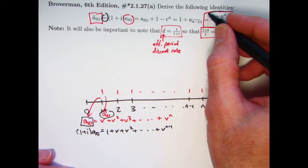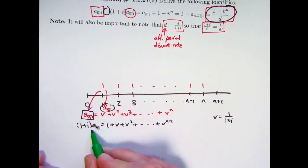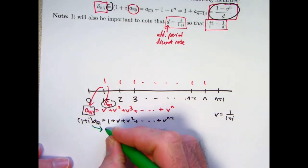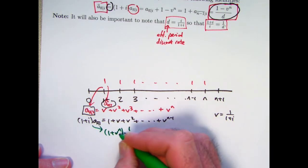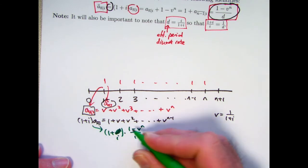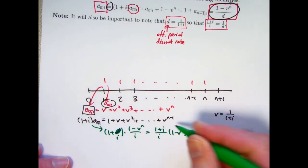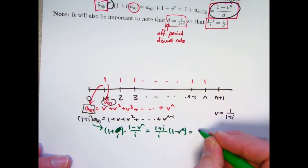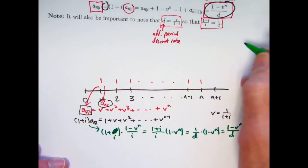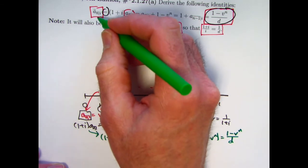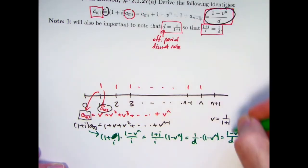Let's verify that both of these things equal (1 − vⁿ)/d. Take the expression 1 plus i times a_n, and replace a_n with its formula from the sum of a finite geometric series: (1 − vⁿ)/i. Rearranging, I can write this as (1 plus i)/i times (1 − vⁿ). Since 1 plus i over i equals 1 over d, this becomes (1/d)(1 − vⁿ), which equals (1 − vⁿ)/d. So I have derived that the present value of this annuity as an annuity due — finding its value right before the first payment — equals (1 − vⁿ)/d.